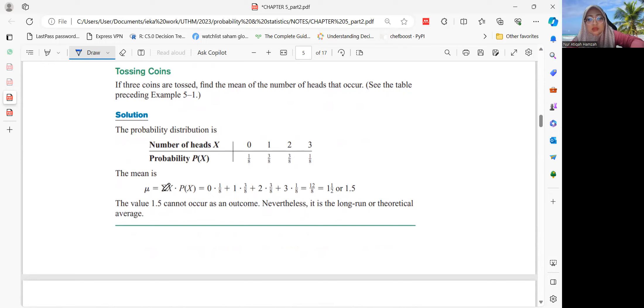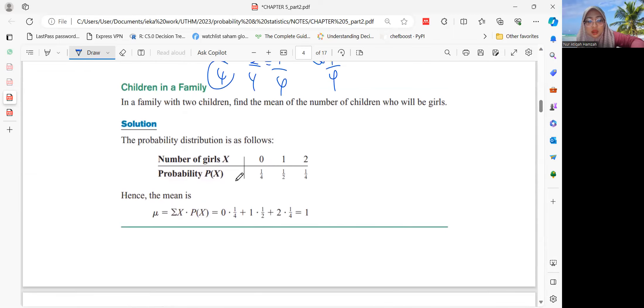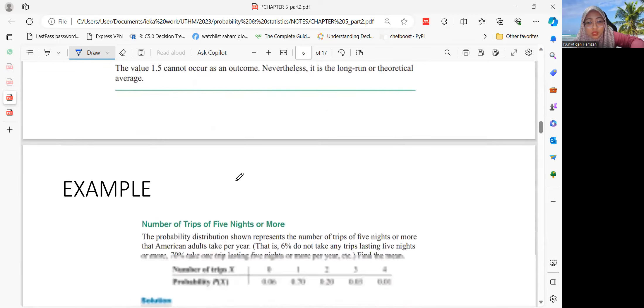The value 1.5 cannot occur as an outcome. Nevertheless, it is the long-run average. Bila dapatkan nilai ni, sebenarnya maksudnya kita dapatkan nilai yang is the average outcome, the theoretical average. Tapi nilai yang kita dapatkan itu adalah secara teoritikal sahaja, the theoretical average.